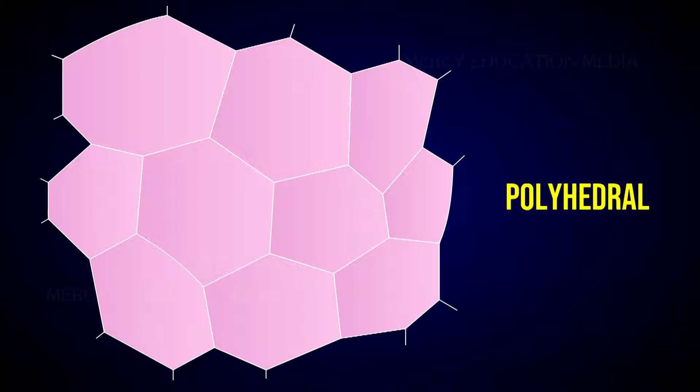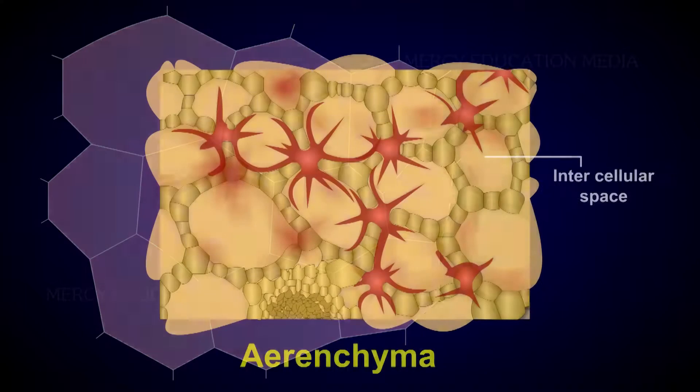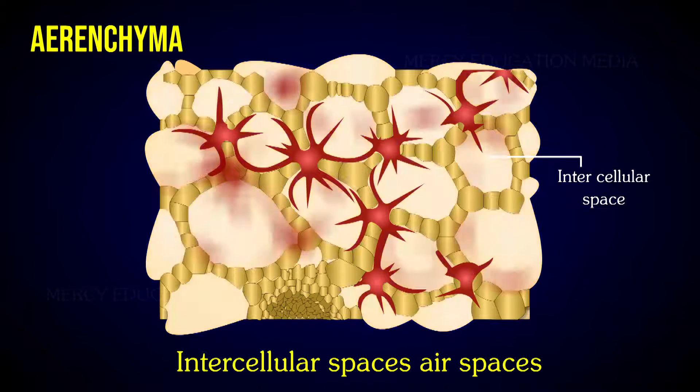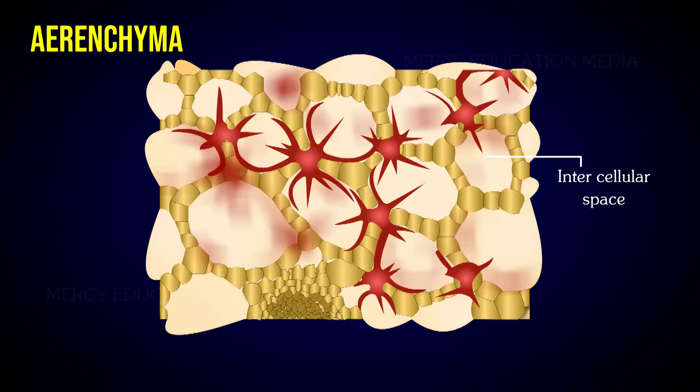In water plants, the parenchyma found in the cortex region possesses well-developed large intercellular spaces called air spaces. This air-filled parenchyma tissue is called aerenchyma. It helps the plant to float in water. Examples: Nymphaea and Hydrilla.